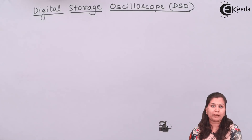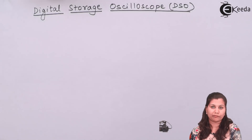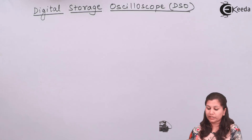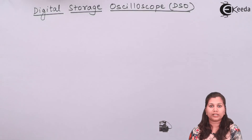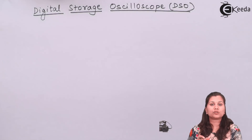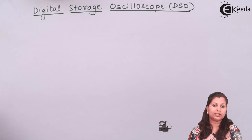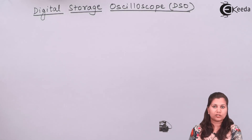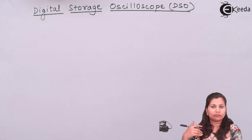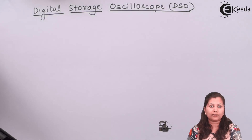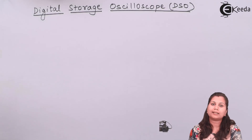An oscilloscope gives us the visual display of waveforms. The digital storage oscilloscope accepts an analog signal, converts that analog signal into a digital signal, stores it in digital memory, and then converts that signal again into analog form and displays it on the screen.